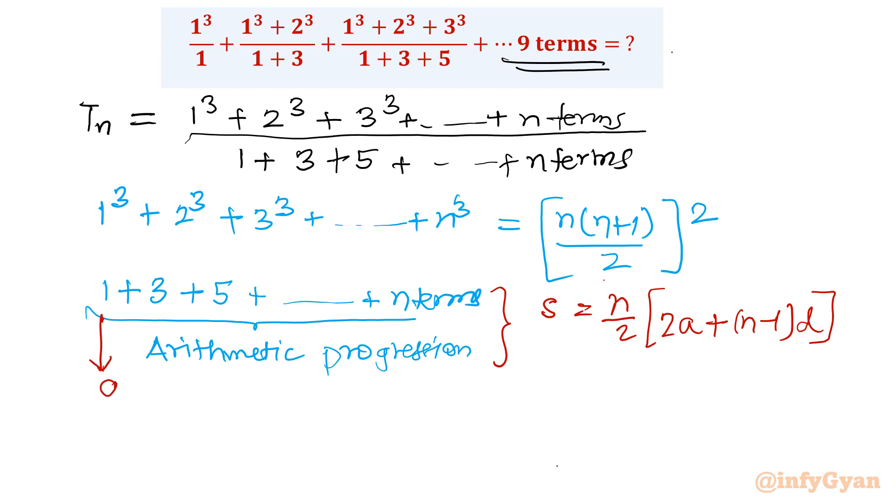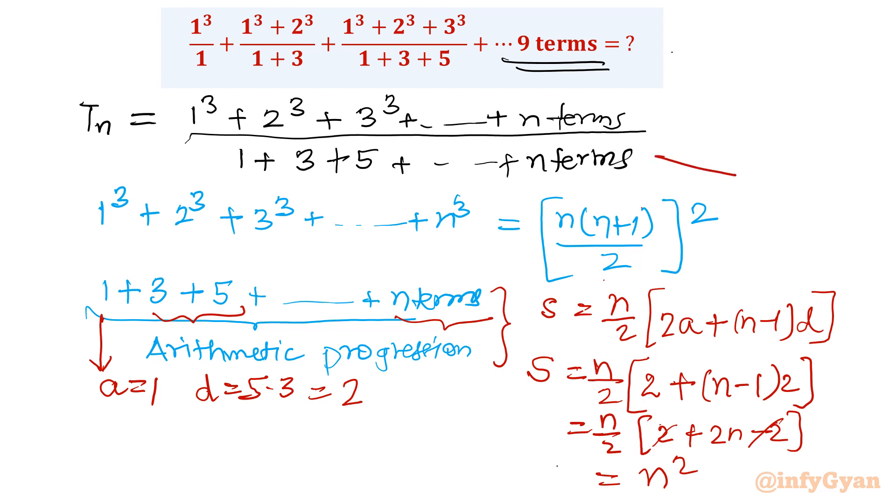Now you can see here first term is 1. You can see the common difference is 5 minus 3 that is 2. Now we will find out sum first for the denominator. So n by 2, twice of a which is 1, so 2 plus n minus 1, common difference is 2. Now let's simplify this value. n by 2, 2 plus 2n minus 2. So plus 2 minus 2 I will cancel. This denominator 2 I will also cancel. What I am having is n square. So the denominator is n square.